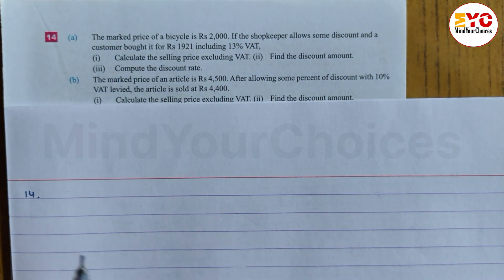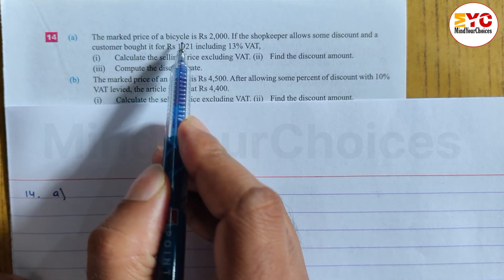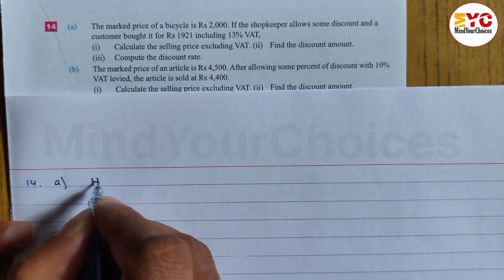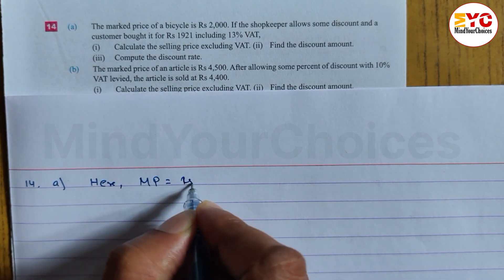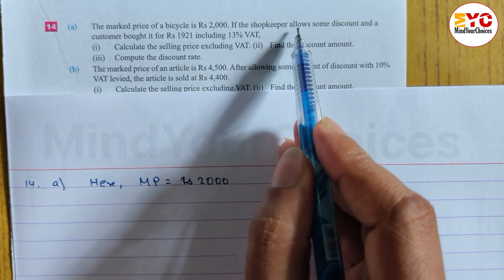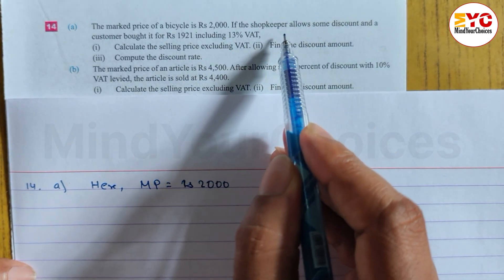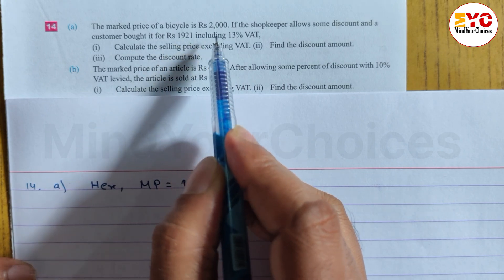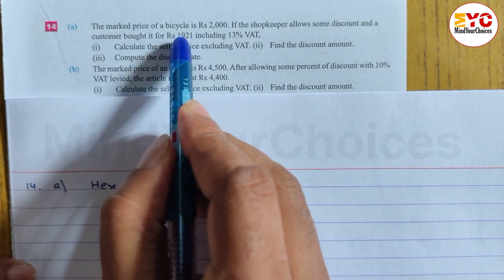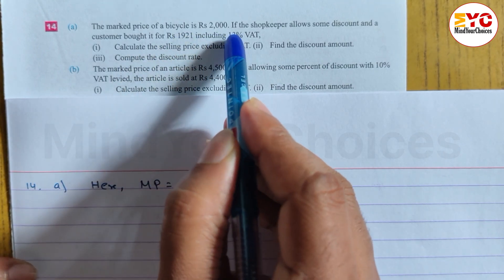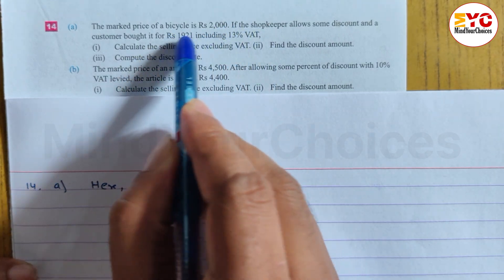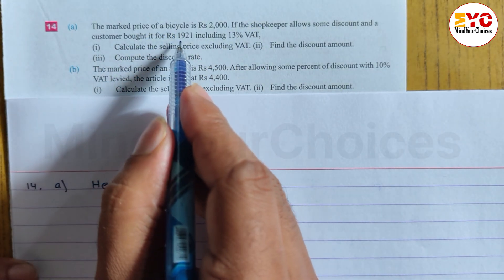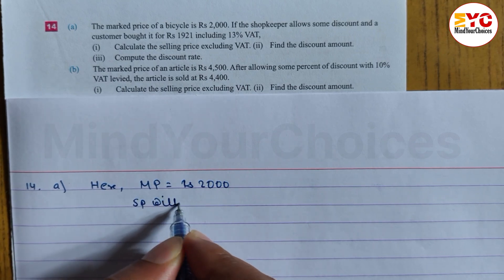In question number 14A, the marked price of a bicycle is Rs. 2000. So we write MP = Rs. 2000. The marked price is also called advertisement price or labeled price. If the shopkeeper allows some discount and the customer bought it for Rs. 1921 including 13% VAT, so SP with VAT is equal to Rs. 1921.